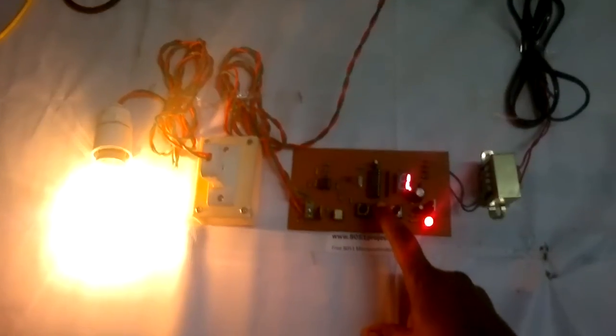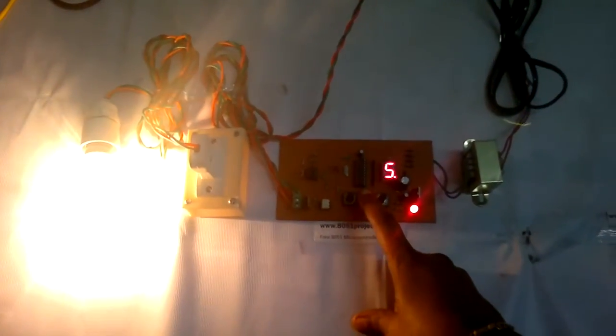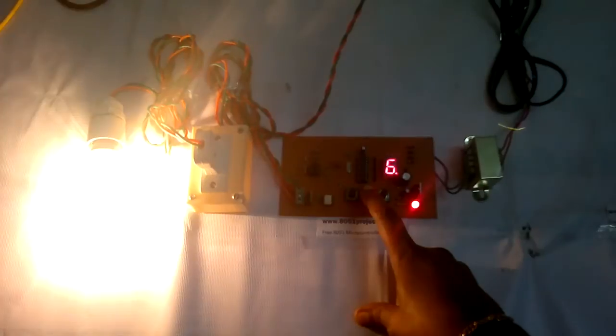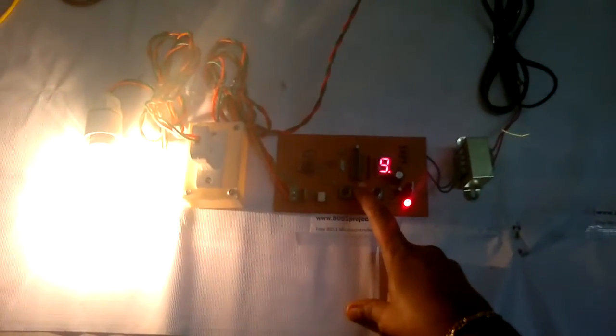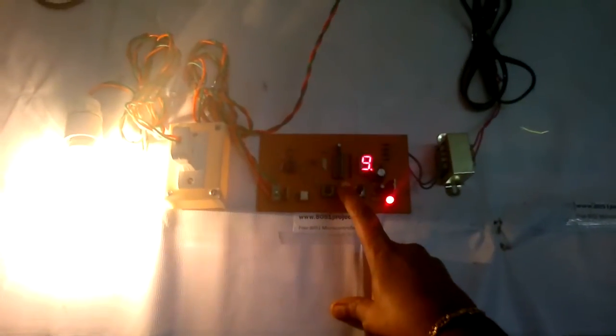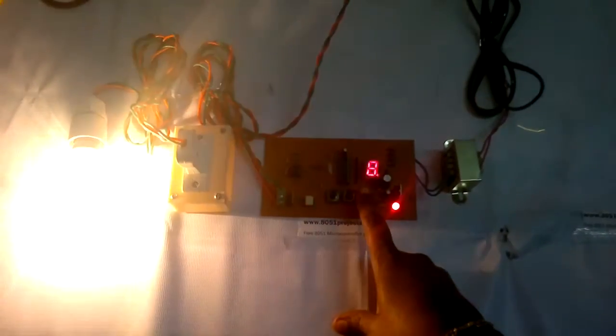The bulb now glows. Now I am increasing the speed, see the brightness continuously increases corresponding to the speed displayed here. If a fan is connected here automatically the speed will increase correspondingly. And now I am decreasing.